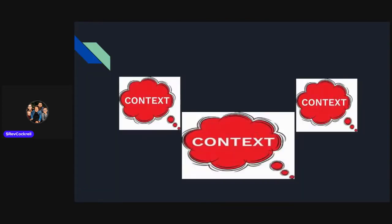You know, in real estate, they say the most important thing is location, location, location. Well, when you're studying the Bible — hermeneutics, the art and science of interpreting the Bible — when you're doing proper Bible study, proper hermeneutics, the most important thing in reading a text, reading a passage of scripture, is context, context, context. Context matters. Context is king.